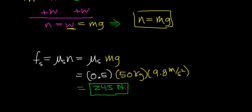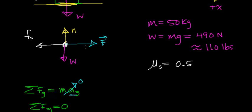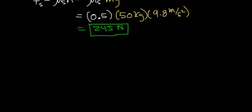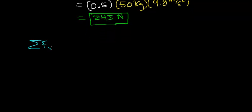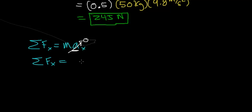The force of static friction is going to oppose the forward motion of this object with a force of 245 newtons. To figure out how much force is required to get this object to start moving in the positive x direction, we use Newton's second law in the x direction. We're looking to get this object to start moving from rest, so the initial velocity is 0, and the acceleration is essentially 0. When you add up the forces in the x direction, they add up to be 0.